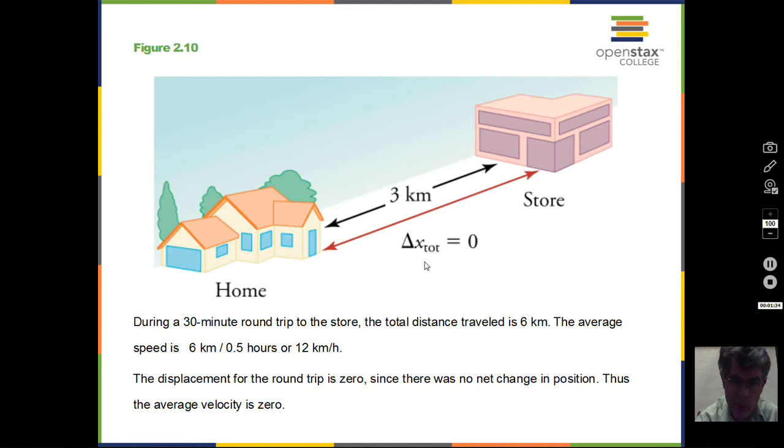The displacement is zero, recall. And consequently, the velocity is zero. The average velocity is zero. We have zero divided by 0.5 hours. That's the legal calculation. You can't divide by zero, but zero can be divided into. So zero divided by 0.5 hours, we'd have zero kilometers per hour for the velocity.